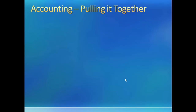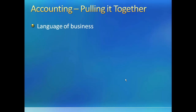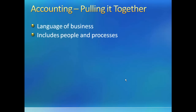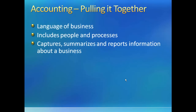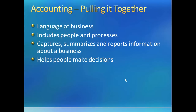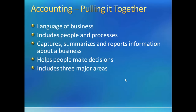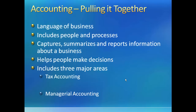So now let's review what we've covered. First, we've defined accounting as the language of business — it includes the people and processes that capture, summarize, and report information about a business. That information is designed to help people make decisions. There are three main types of accounting: tax, managerial, and financial.